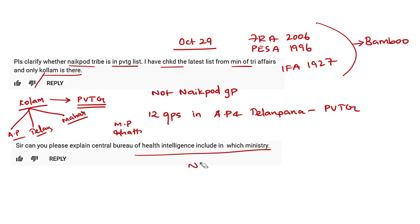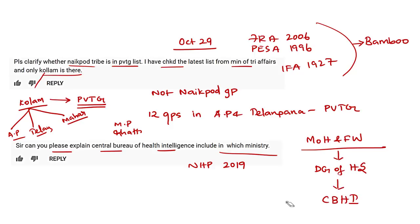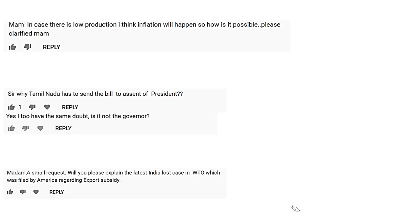Around 12 tribal groups residing in Andhra Pradesh and Telangana were declared as Particularly Vulnerable Tribal Groups, and the Naik Pod tribal group is not among them. However, both tribal groups are listed as Scheduled Tribes in both states. The Kolam tribal group is declared as a PVTG in three states — Andhra Pradesh, Telangana, and Maharashtra — even though they reside in five states including Madhya Pradesh and Chhattisgarh. The next comment asks about the Central Bureau of Health Intelligence.